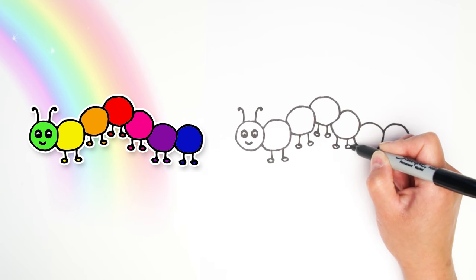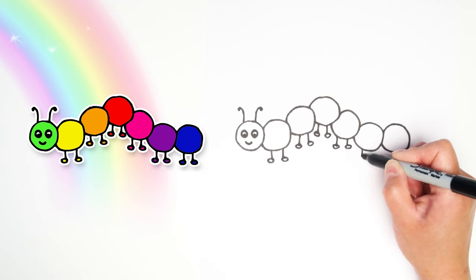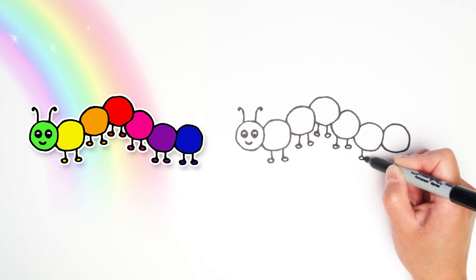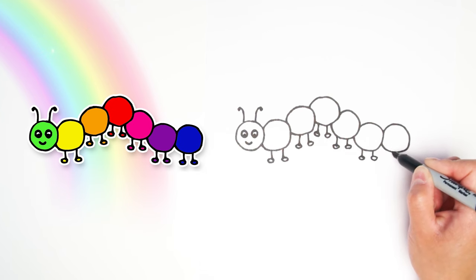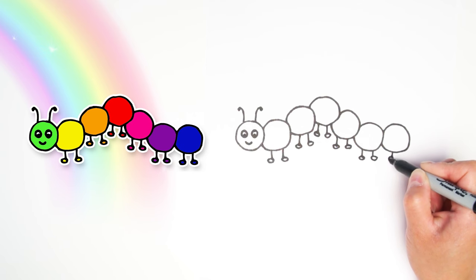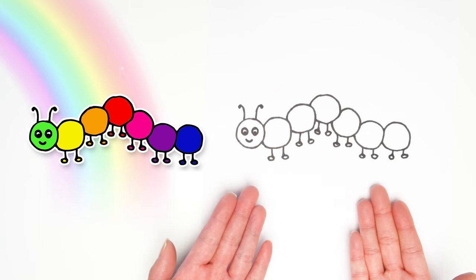This is so he can scurry along on all the leaves and climb upside down and sideways and on the branches. All right. The last pair of legs on this last circle. There we go. Our little caterpillar is all done.